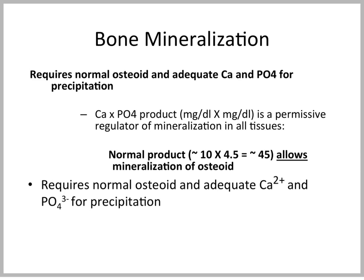Bone mineralization requires normal osteoid — the collagen matrix — and adequate calcium and phosphate for precipitation. It's important to remember that when the product of calcium and phosphate concentrations exceeds the soluble limit, mineralization occurs. Clinically, if the calcium × phosphate product in mg/dL is greater than 45 — in cases of hypercalcemia or hyperphosphatemia — there is a tendency to mineralize not just osteoid but also soft tissues, which can cause serious kidney damage.